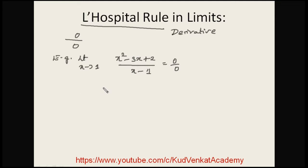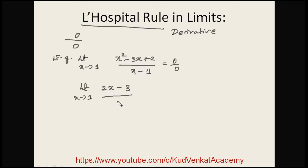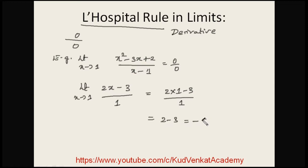Applying L'Hôpital's Rule: the derivative of x² is 2x, derivative of 3x is 3, and derivative of 2 is 0, giving 2x - 3 in the numerator. The derivative of (x - 1) gives 1 in the denominator. Now substituting x = 1: we get (2×1 - 3)/1 = 2 - 3 = -1.